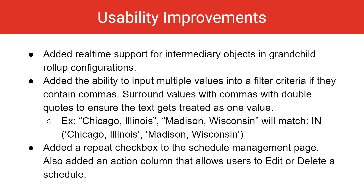There are also many usability improvements introduced in version 20.9. We've added real-time support for intermediary objects and grandchild roll-up configurations. You can now input multiple values into a filter criteria if they contain commas. Surround values with commas with double quotes to ensure the text gets treated as one value — for example, putting a city and state into quotes like "Chicago, Illinois" or "Madison, Wisconsin".